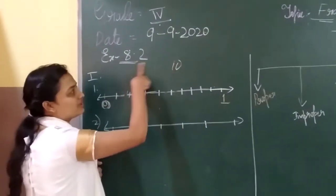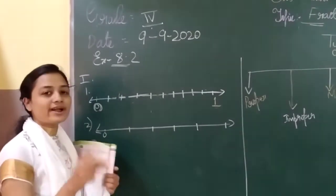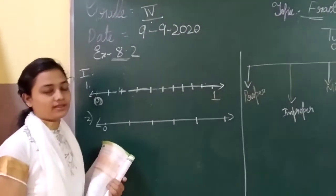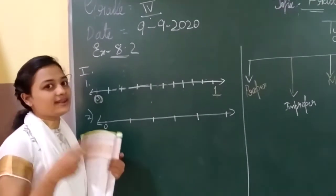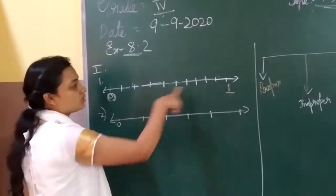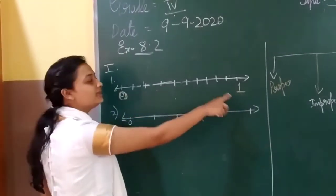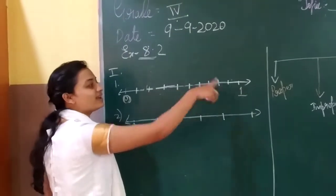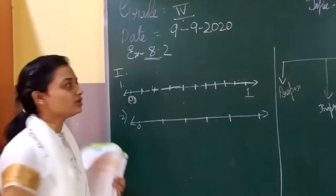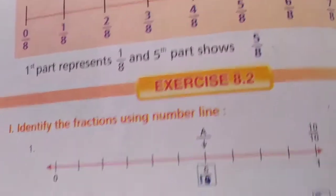So what is a fraction? It is only 1 divided into many. We saw 1 pizza divided into many. So when we take from 0 to 1, that is only 1 line divided into many. Now move to the textbook exercise 8.2, page number 152.